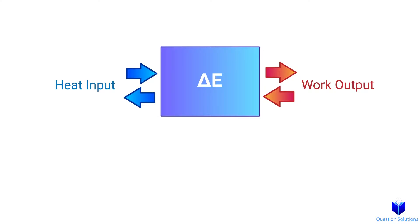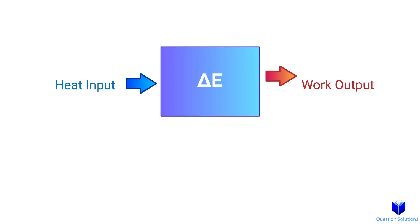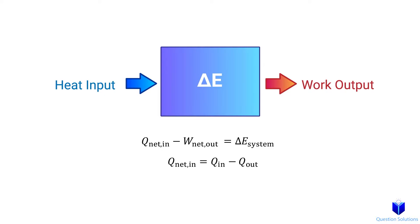Sometimes we can have unknown heat and work interactions. In cases where we don't know the direction for heat transfer or work transfer, we have to assume a direction. The normal convention is to assume heat is going to be transferred into the system — so heat input — and work is done by the system — so work output. We can write it like this. Net heat is heat in minus heat out, and net work is work output minus work input. If you get a negative answer, that means it's actually opposite to your assumption.